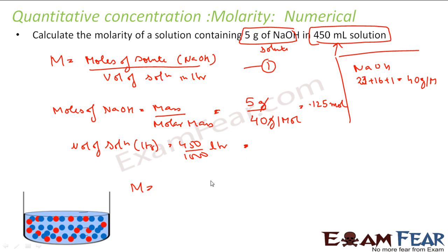Moles of solute is 0.125 moles divided by volume, which is 450 divided by 1000 liters. Please note the units. This is moles, 0.125 moles. This is liters, 450 by 1000 liters. When you solve this you get 0.278 moles per liter, or I can also say 0.278 M. So that is my molarity of the solution.